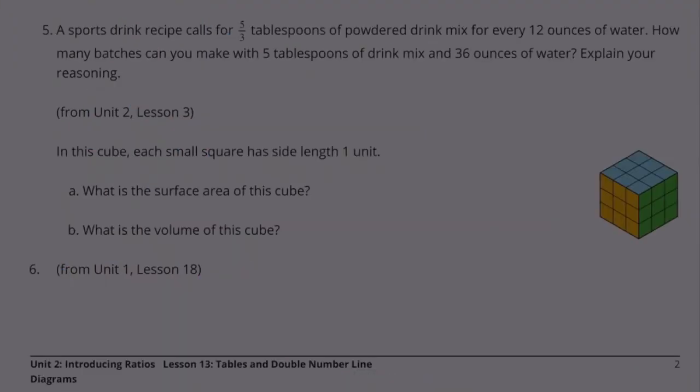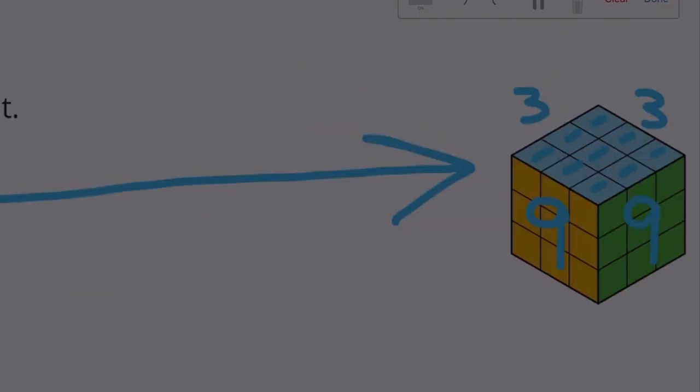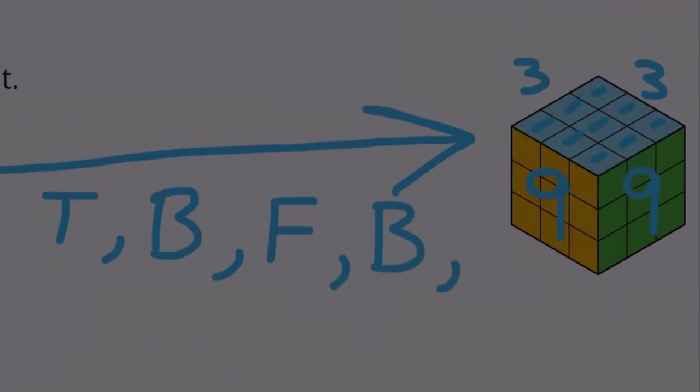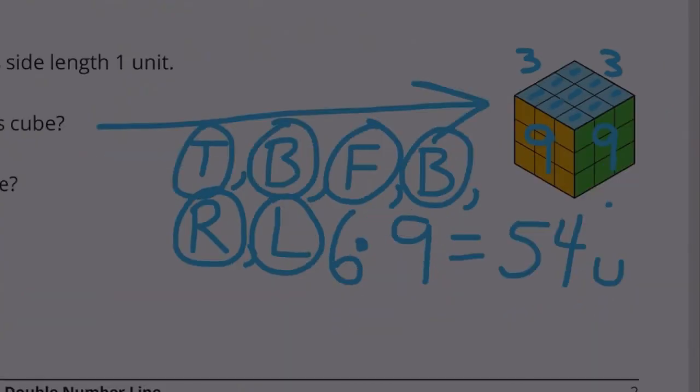Problem 5a: What is the surface area of this cube? Three by three. Three times three is nine. Each side is worth nine. On a cube there's a top, a bottom, a front, a back, a right side and a left side - six sides. Six times nine: six times nine equals six less than six times ten. I know six times ten is 60, 60 minus six is 54, so six times nine should be 54, and these are units squared. The area is 54 square units.